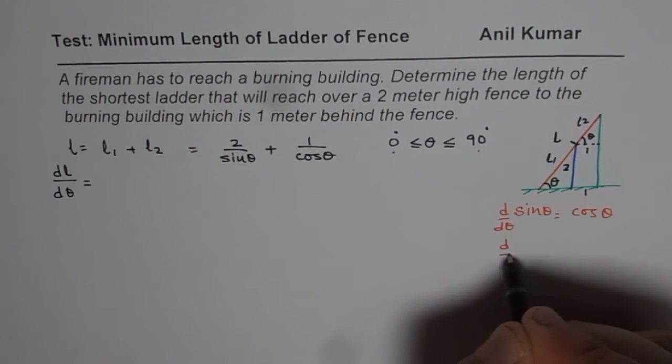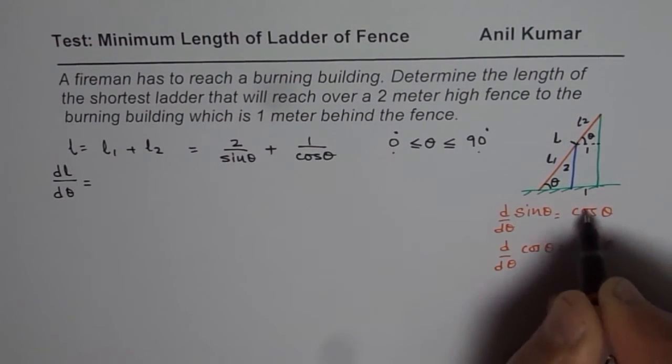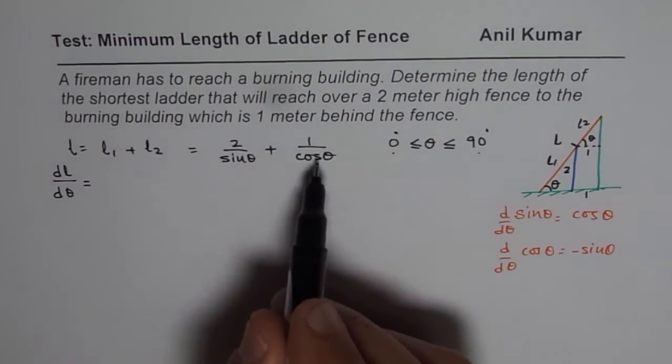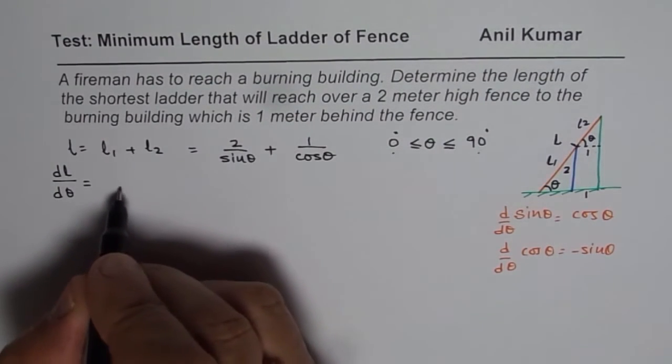And the derivative of cos theta is minus sine theta. So we are going to use this derivative to find the derivative of the function, which in our case is 2/sin θ plus 1/cos θ. So applying the quotient rule.